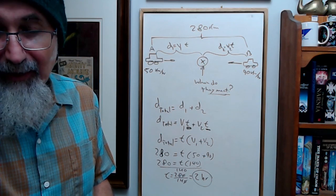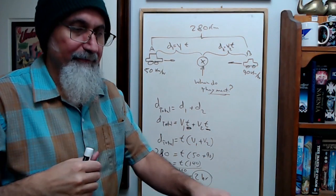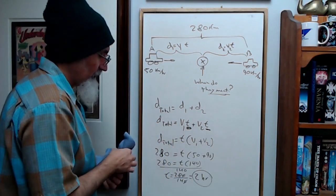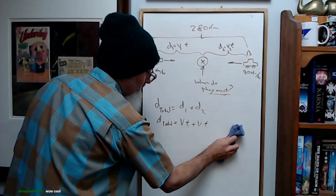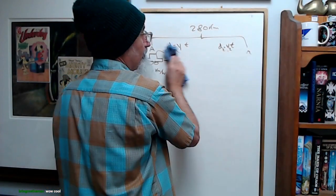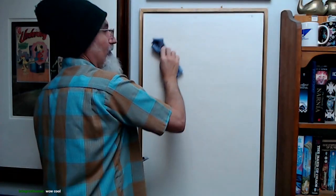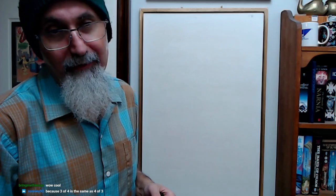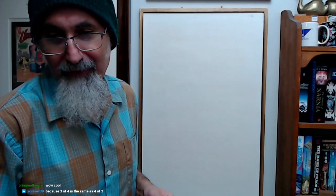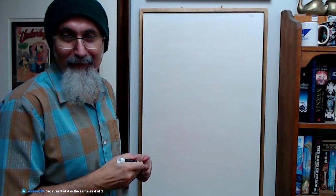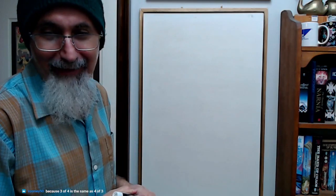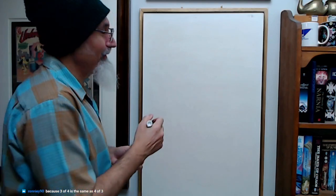Just break it down. Let me erase this here. So commutative—because 3 of 4 is the same as 4 of 3, basically, right?